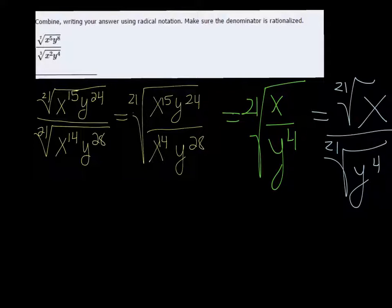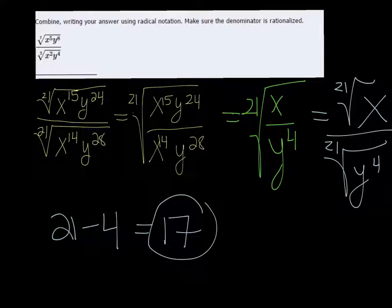What we need to do is raise y, as a power, that's a multiple of 21. And since it's only 4, the quickest way to get there is to get to 21. So if we think, 21 minus 4, that's equal to 17. I need to raise it to the 17th power in order to make this happen.